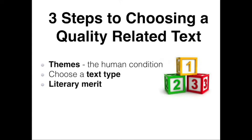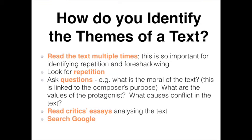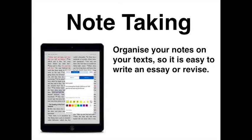I recommend you follow three steps when choosing your related text. Step one is to make sure you understand the themes of your prescribed text. Themes are ideas that recur in or pervade a piece of art or literature. I'd recommend focusing on themes that explore the human condition. The first thing you need to do to identify the themes of your prescribed text is to read it multiple times. Every time you read it, you'll gain new insights. I love having my texts on my iPad, as this allows me to make notes on the text, which are very easy to find when writing an essay or revising for an exam.